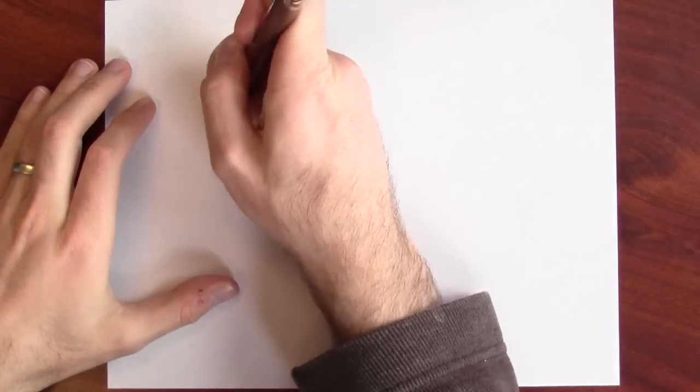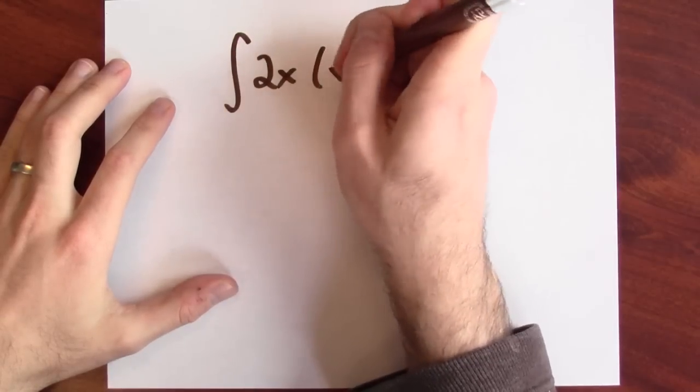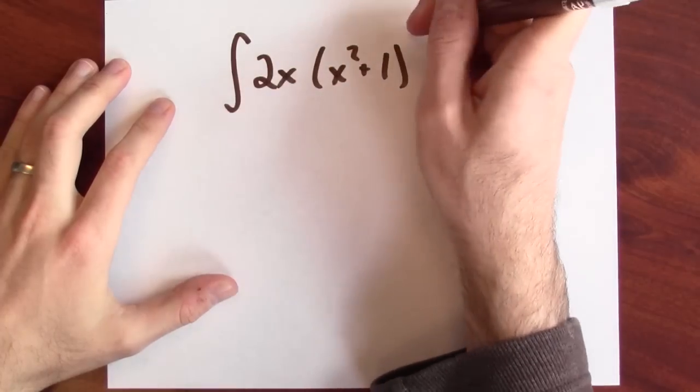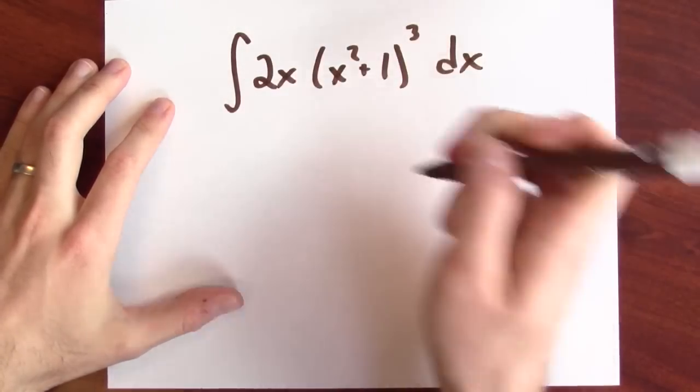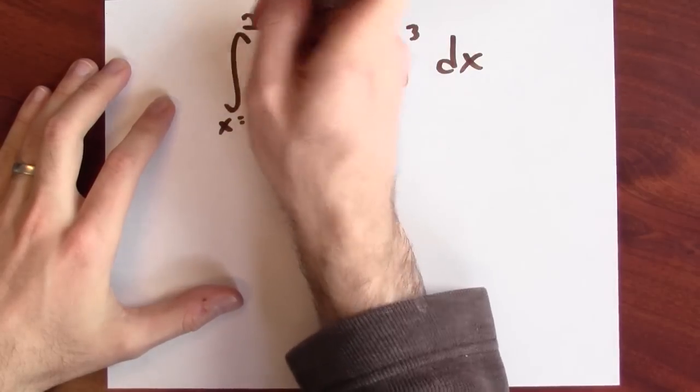Here's an example of a definite integral. Let's evaluate the integral of 2x times (x squared plus 1) to the third power dx as x goes from 0 to 2.